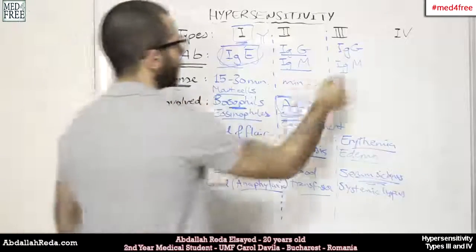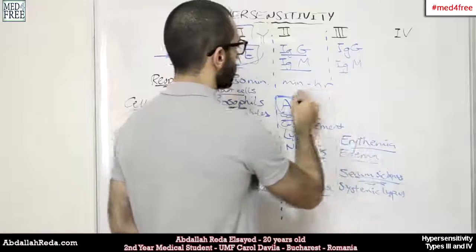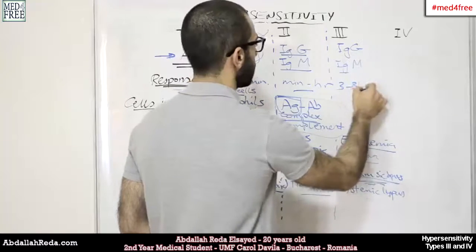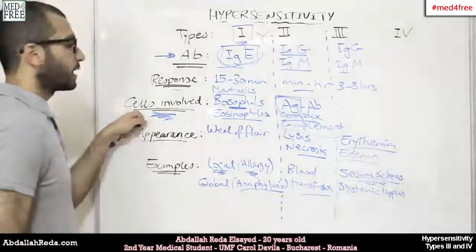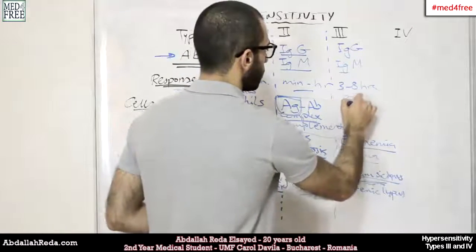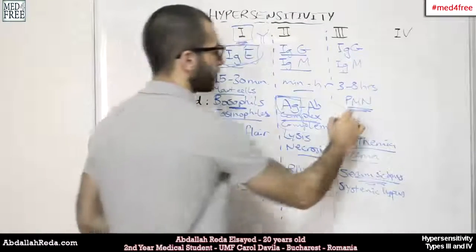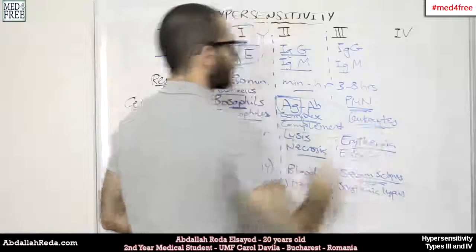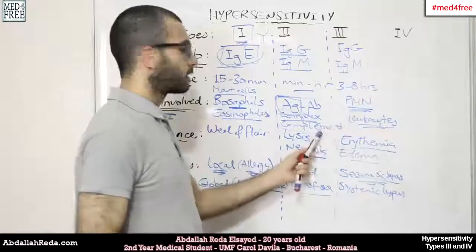The response in the case of the third type of hypersensitivity is longer than the second type. We would have from 3 to 8 hours in order to obtain such a reaction. The cells involved would be the polymorphonuclears — so we would have leukocytes, for example — and of course PMN complements, as mentioned in the illustration.